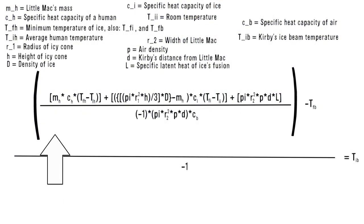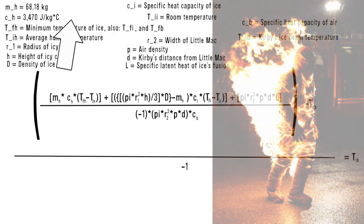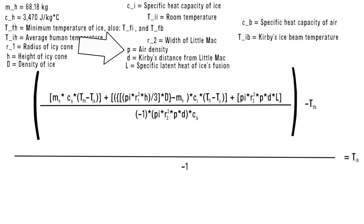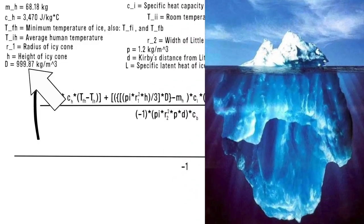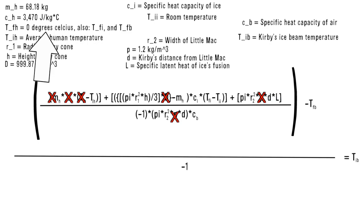We can fill in M sub H with Little Mac's mass. The 150 pounds converts to around 68.18 kilograms. The specific heat capacity of a human, or the human resistance to certain temperatures, is around 3470 joules per kilogram Celsius. The average density of air is 1.2 kilograms per cubic meter. The average density of ice is 999.87 kilograms per cubic meter. And ice freezes at 0 degrees Celsius. Already, that knocks out a bunch of the variables.